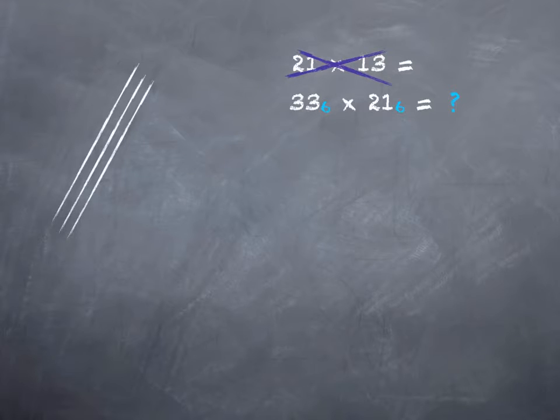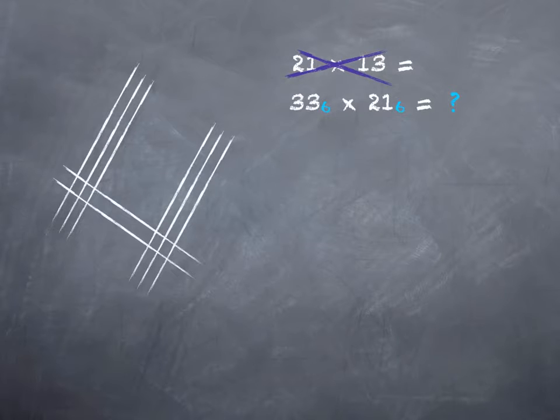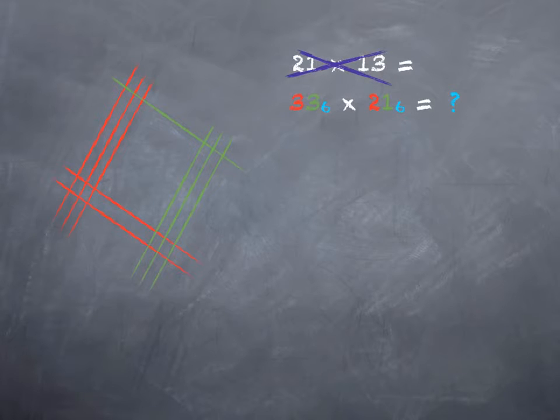So now we can draw our picture just like we did before. Three in the sixes place, and three in the ones place. Two in the sixes place, and one in the ones place. And again, let's color code it to keep track. Now, when I look over here, this is my sixes place intersecting with my sixes place. Which in base six is just ten, or one zero. So, I'm going to leave myself with two trailing zeroes, just like before, which is ten to the base six squared.